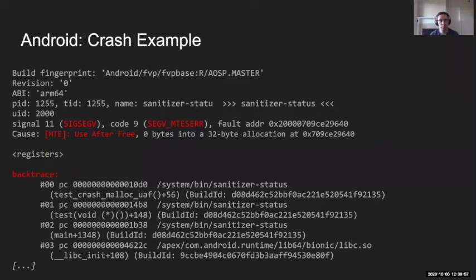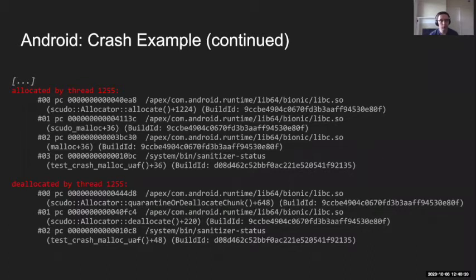This is an example of what we are able to produce. You can see it's a segmentation fault with a specific code, MTSR, that can be used to recognize such problems. It has a cause line displaying what we think happened — use-after-free in this case — the offset and allocation size, followed by the usual backtrace, and then two more stack traces showing where this memory was most recently allocated and where it was previously deallocated.